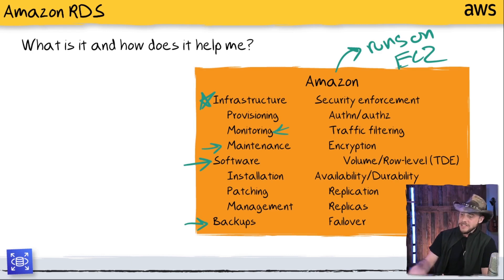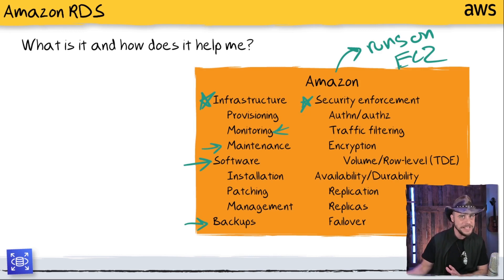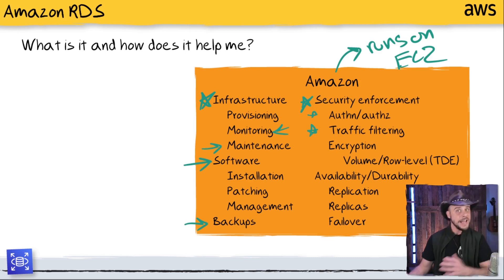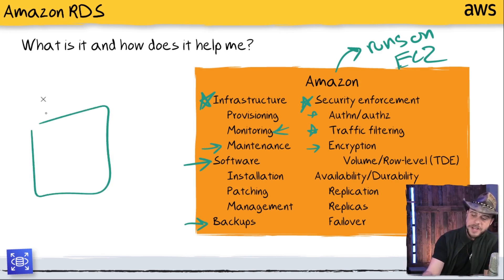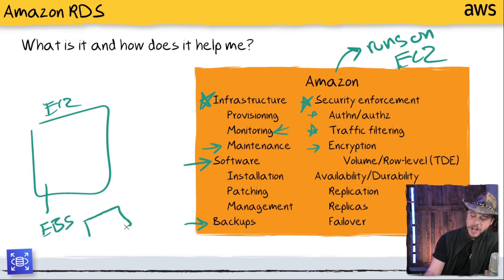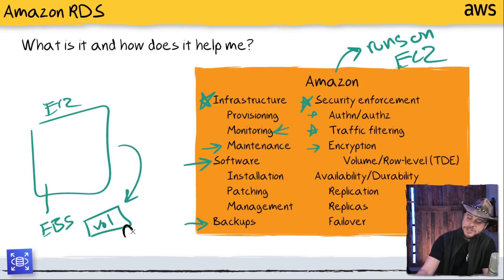Moving on — when it comes to security, we all care about security, but that doesn't mean I need to handle every individual administrative layer myself. If I can give AWS quality expectations and have them execute against that, that's a pretty big win. The authentication, the traffic filtering as it moves from the network through the connector into the database, and the encryption options available — these can all be set as expectations when I launch the database and have Amazon execute against them. These do run on EC2 instances in the background, and the underlying storage layer uses EBS Elastic Block Store volumes. By telling AWS that you want the database encrypted — a simple flag — they will handle the application of that encryption logic onto the storage layer itself.